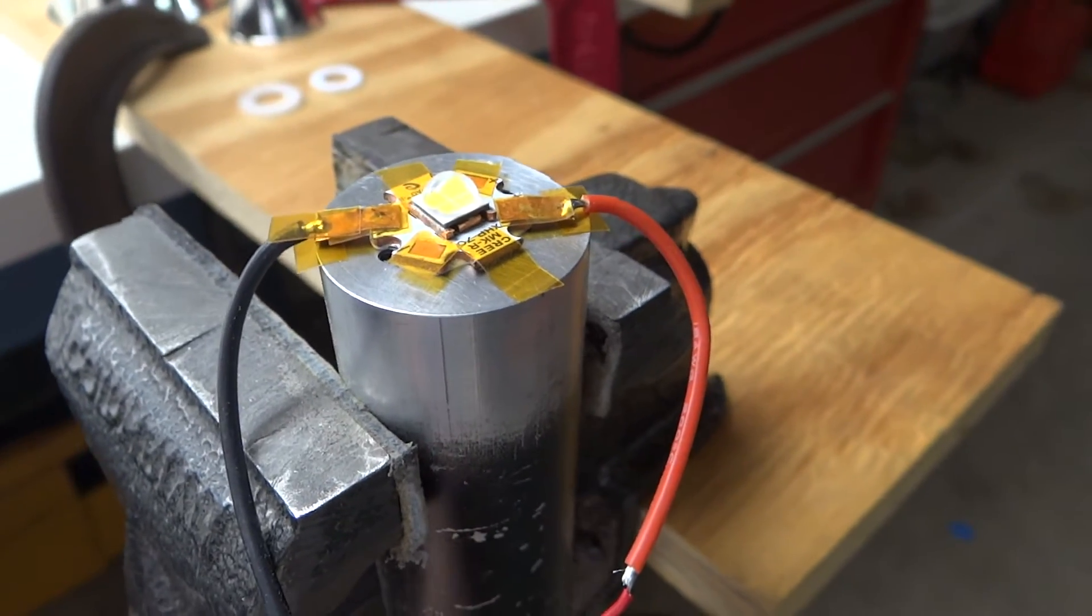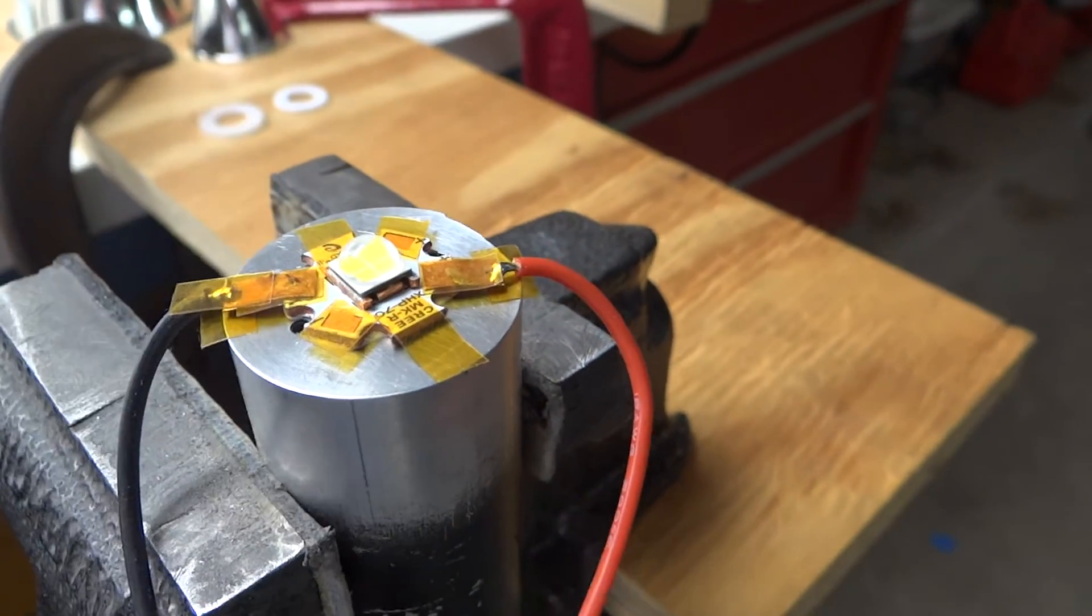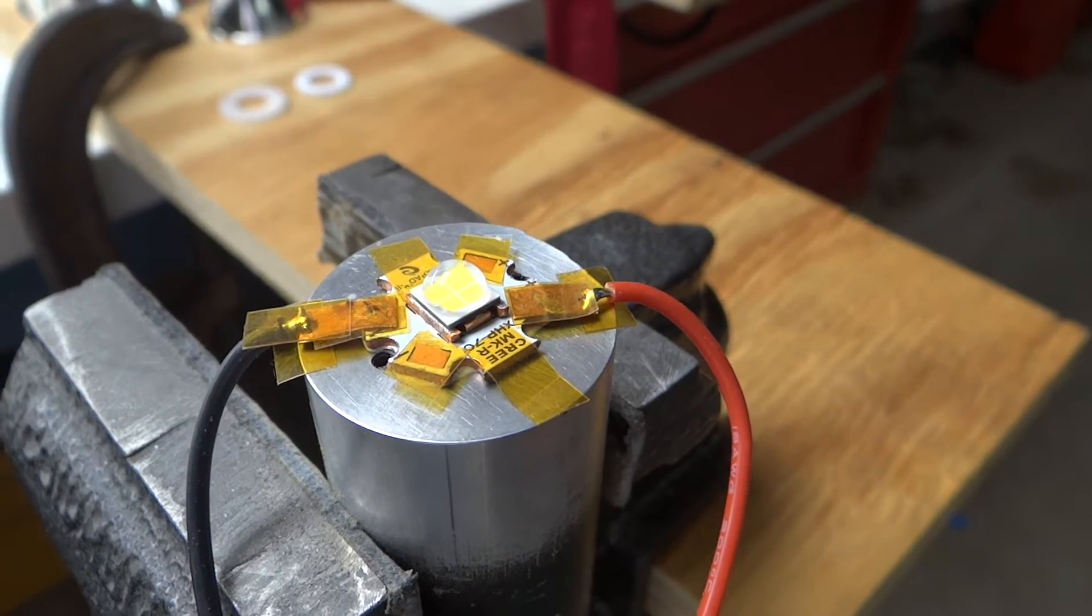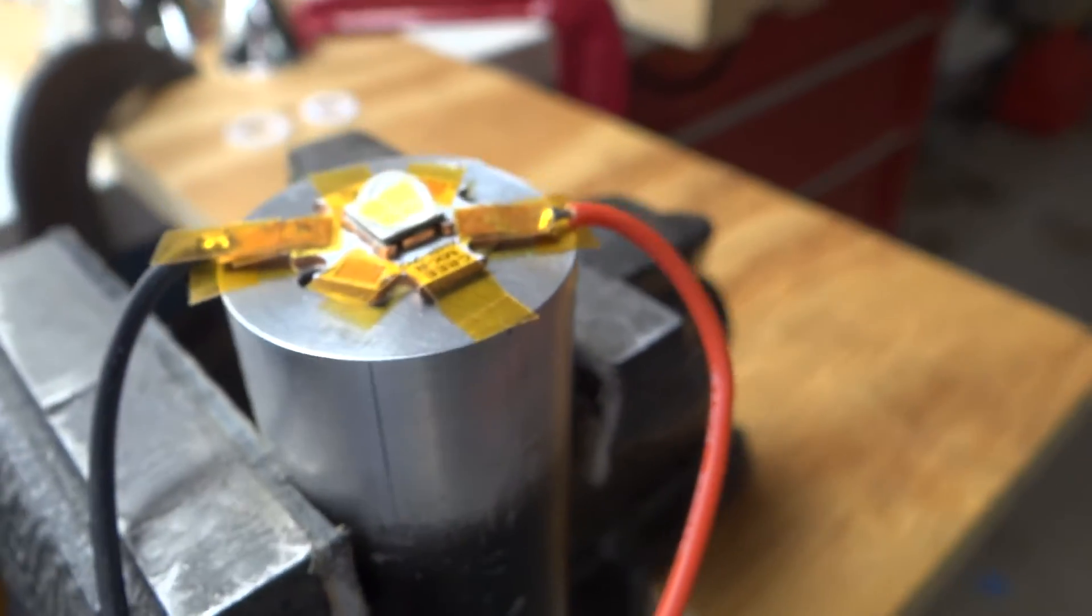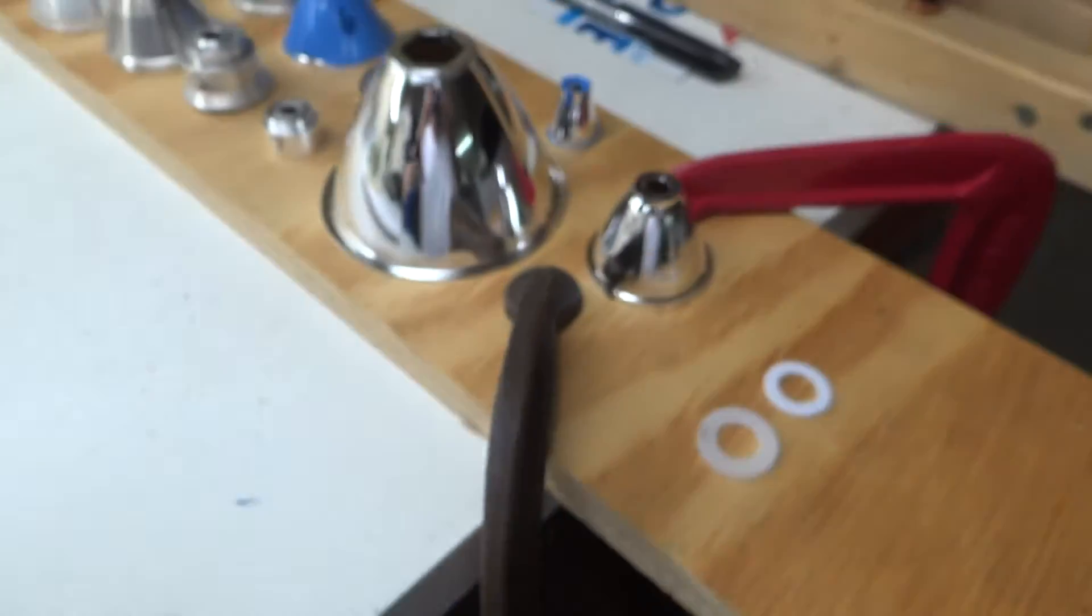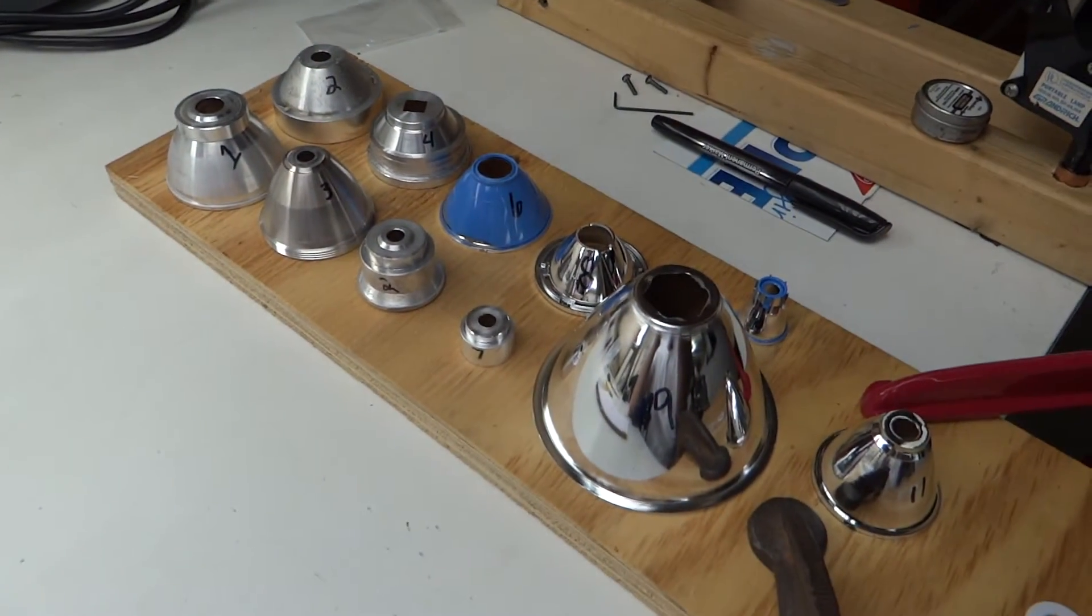Anyways, this is my test setup. It's an aluminum bar. It's a copper star with the XHP70 on it. And like I say, the LED will be raised a little. And I have a bunch of reflectors. I have 11 reflectors here.